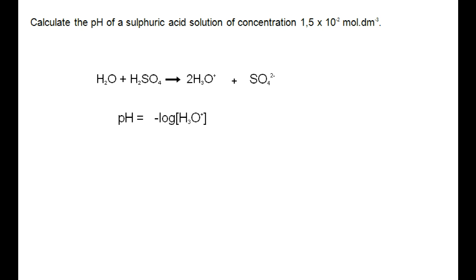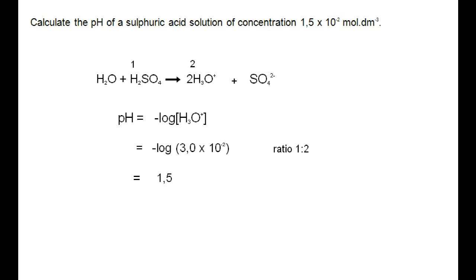Using pH = -log[H3O+], the mole ratio of H2SO4 to H3O+ is 1:2. Since [H2SO4] = 1.5×10⁻² mol·dm⁻³, the concentration of H3O+ is double: 3.0×10⁻² mol·dm⁻³. Therefore, pH = -log(3.0×10⁻²) = 1.5. A pH of 1.5 is very close to 1, confirming this is a strong acid.